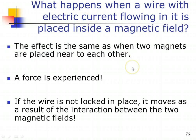What actually happens is this. Recall that when an electrical current flows past a conductor, something is generated around it — a magnetic field. So if you place this conductor inside the magnetic field of another different set of magnets, effectively we are talking about two magnetic fields interacting with one another.